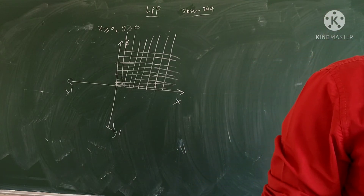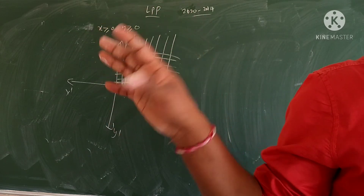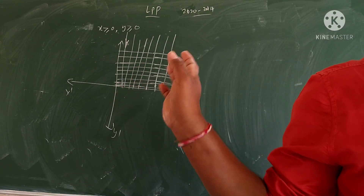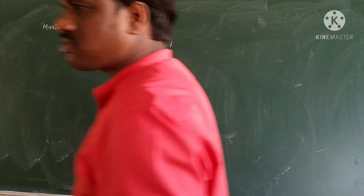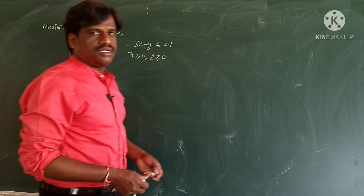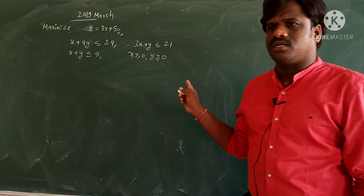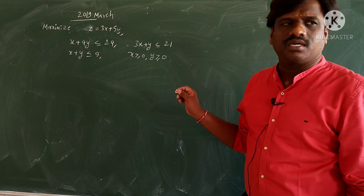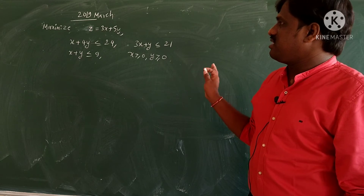Now I will do one or two previous year questions. You can follow my existing playlist videos to learn the concept in detail. I am explaining the previous year questions here - the last question I will explain is from 2019. If you want to learn the concept, go to those videos. Now: z = 3x + 5y, and you have these inequalities - you have to maximize z.